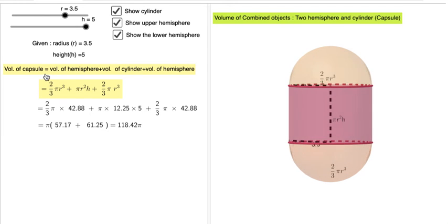Volume of the capsule equals volume of the hemisphere plus volume of the cylinder plus volume of the lower hemisphere. So 2 by 3 pi r cube plus pi r square h plus 2 by 3 pi r cube. You can calculate and get the volume of this capsule.